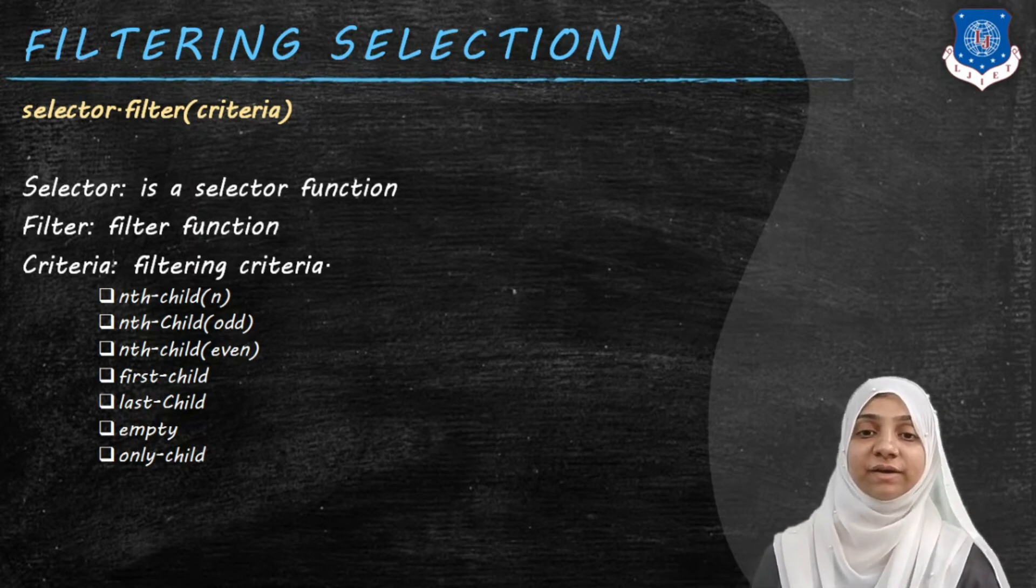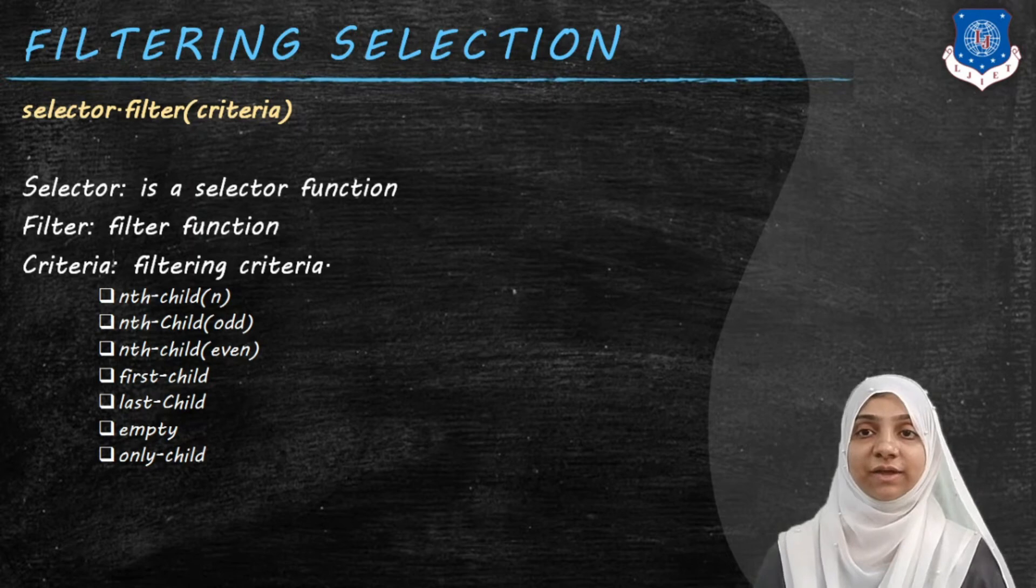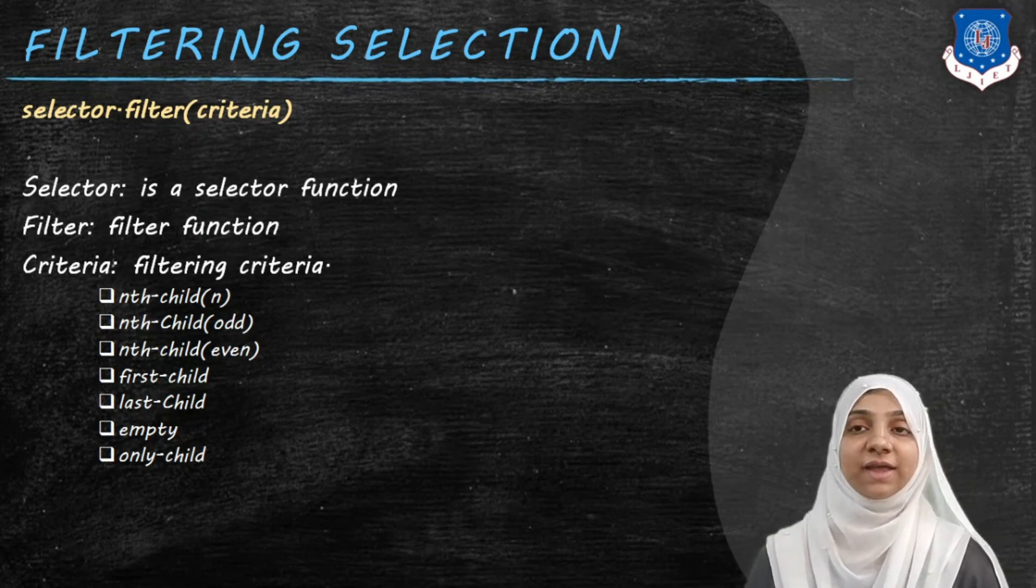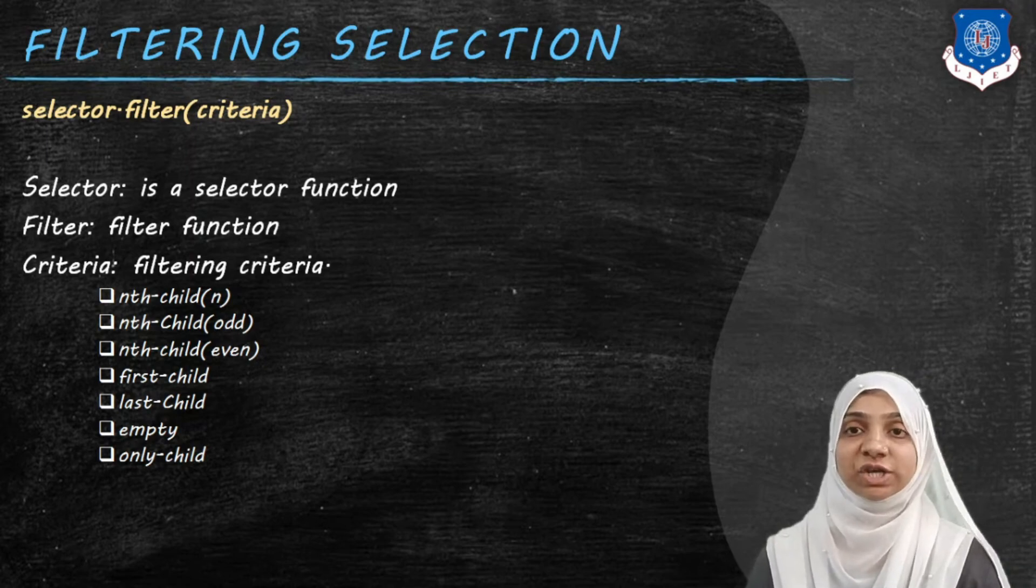Filtering selection will follow a syntax of selector period filter, and within bracket, we must specify criteria. Now, this criteria can take different options. It can take nth child of n, it can take nth child of odd, nth child of even, first child, empty, or only child.